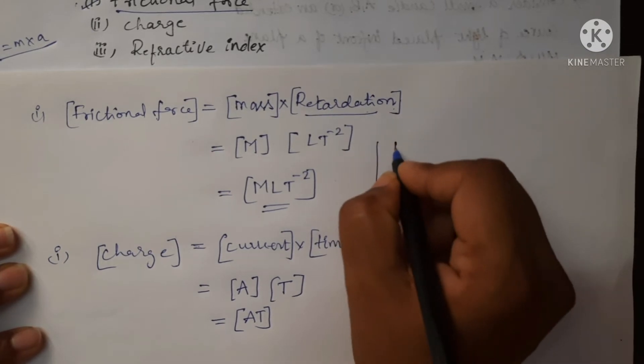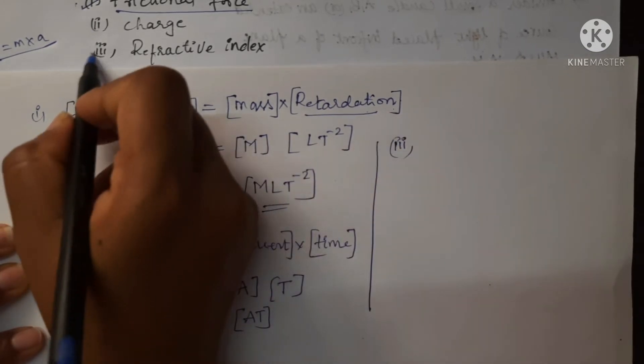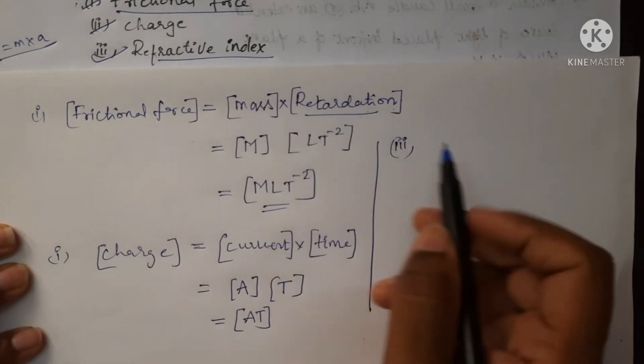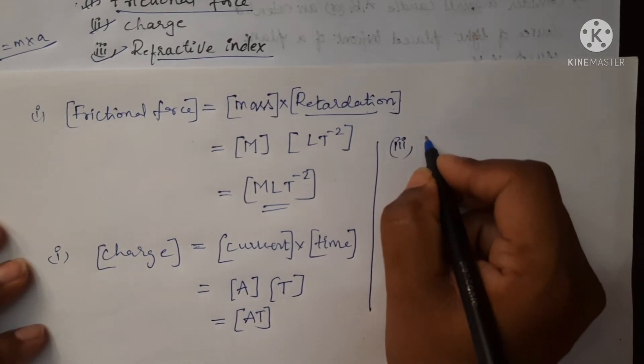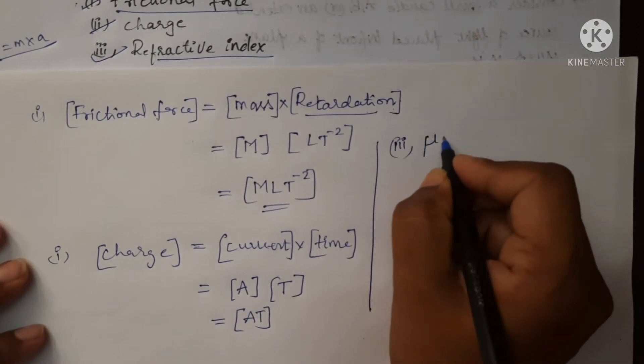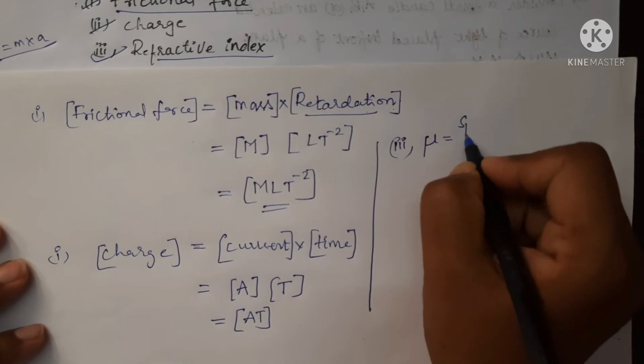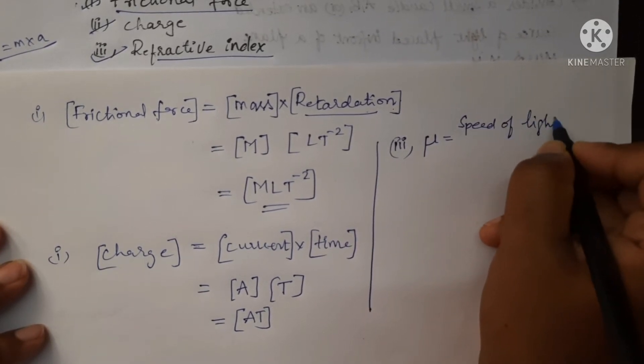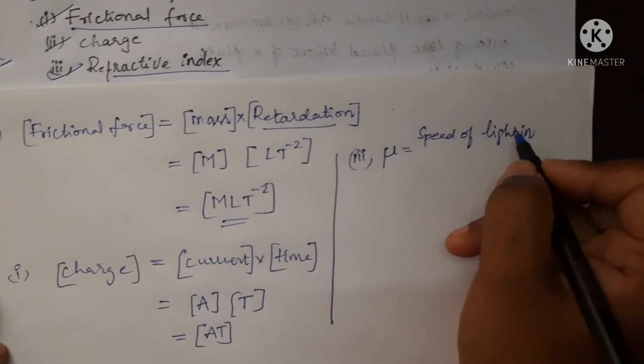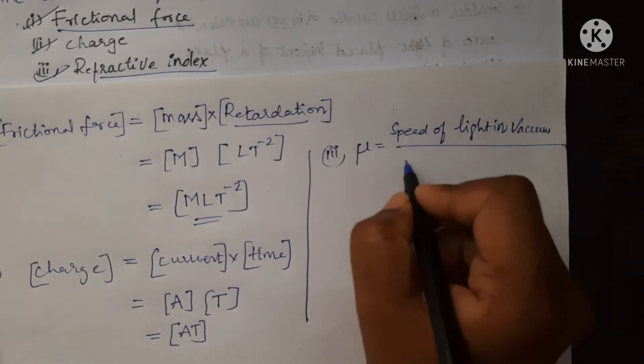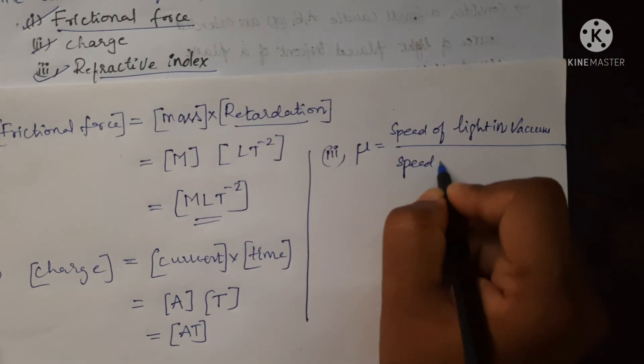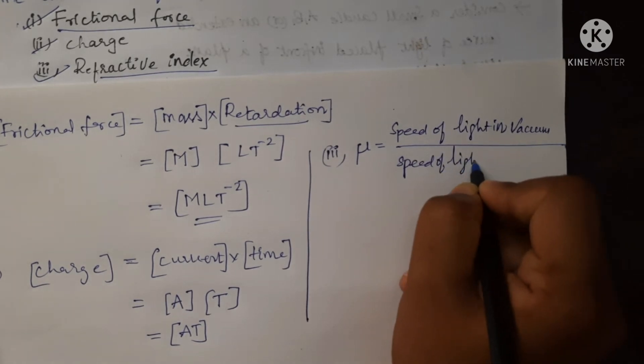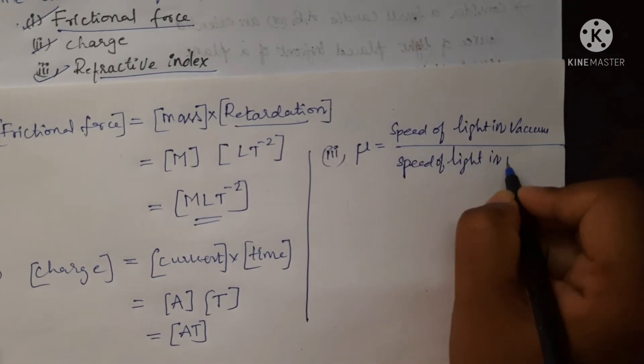The third one is refractive index. Refractive index is denoted with the letter μ, which equals speed of light in vacuum upon speed of light in medium.